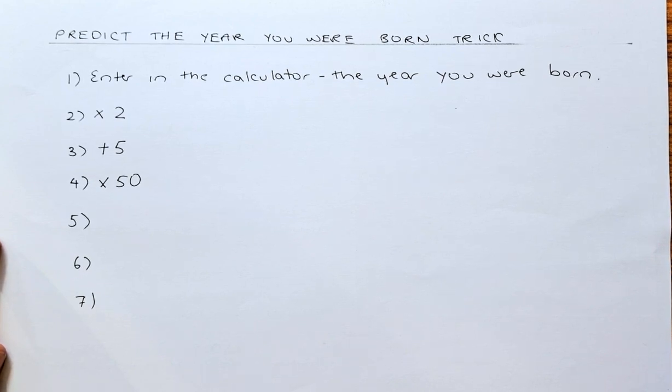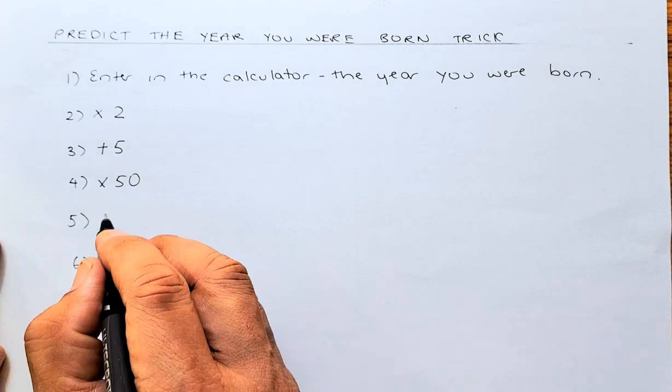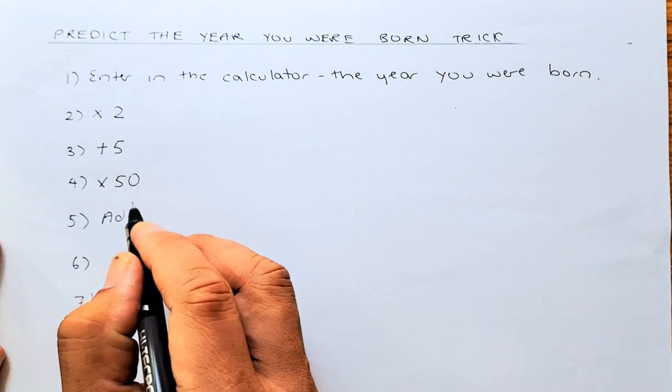So now, you are ready to do the last 3 steps. The 5th step, you are going to add your age.